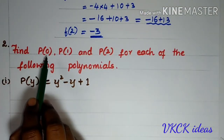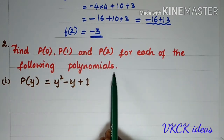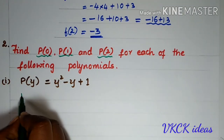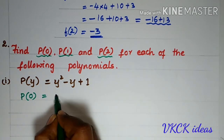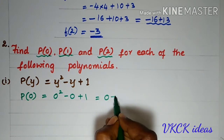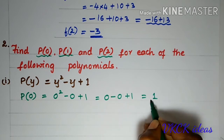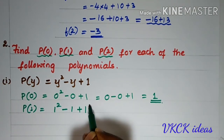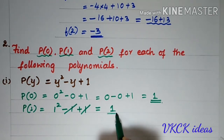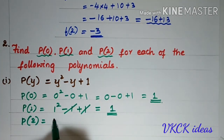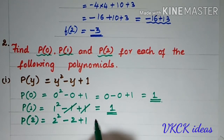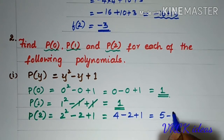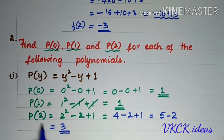The second question is: Find p(0), p(1), and p(2) for each of the following polynomials. Here, y is the variable. For p(0), replace y by 0: 0² - 0 + 1 = 1, so p(0) = 1. For p(1): 1² - 1 + 1; the -1 and +1 cancel, leaving 1, so p(1) = 1. For p(2): 2² - 2 + 1 = 4 - 2 + 1 = 3. So, p(2) = 3.